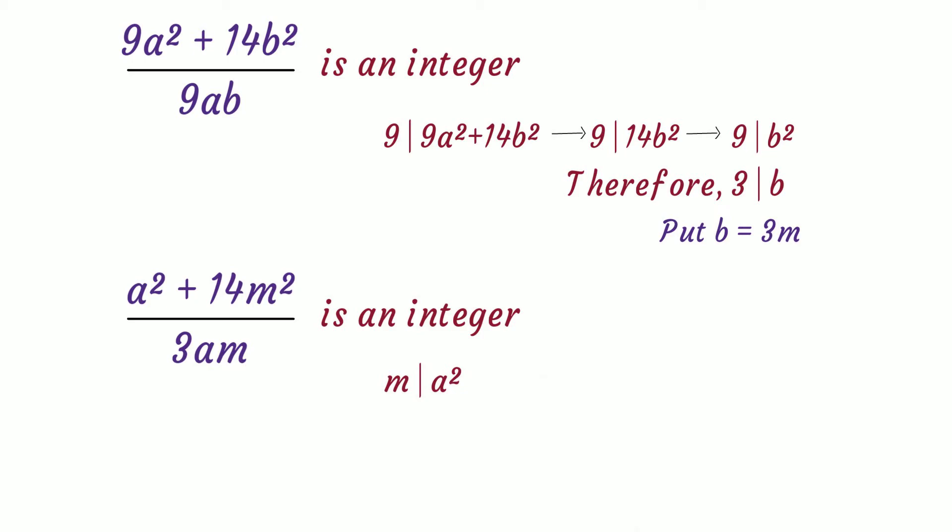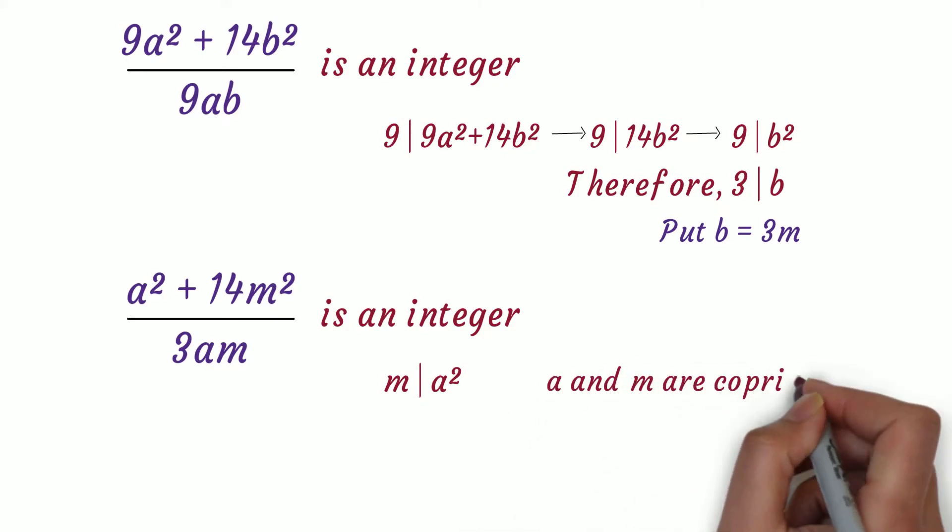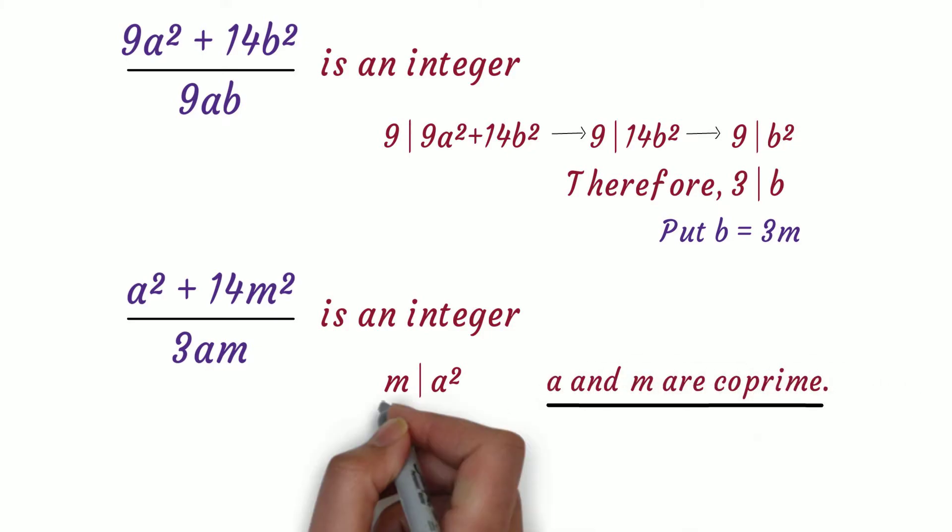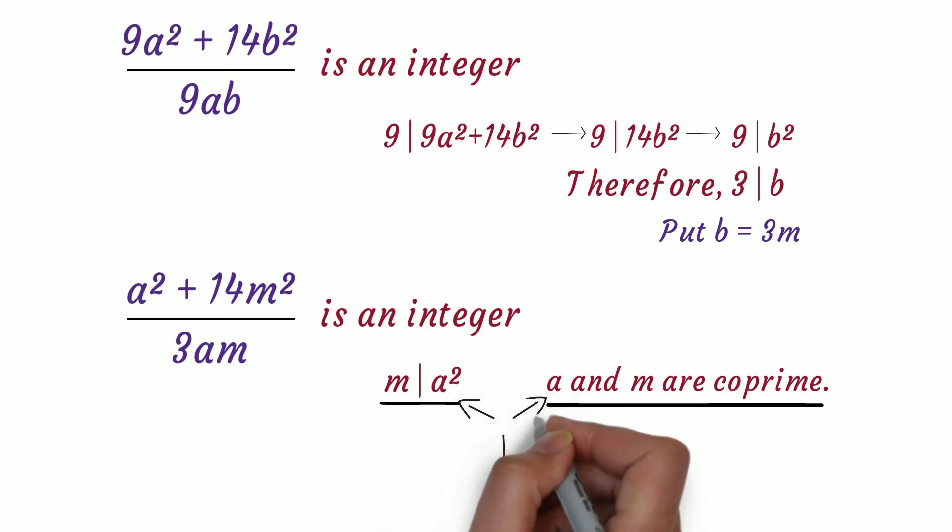But we already know hcf(a,b) = 1, that is hcf(a,3m) = 1. This implies hcf(a,m) = 1. So the only possible pair (a,m) where a and m are coprime and m divides a² is m = 1.